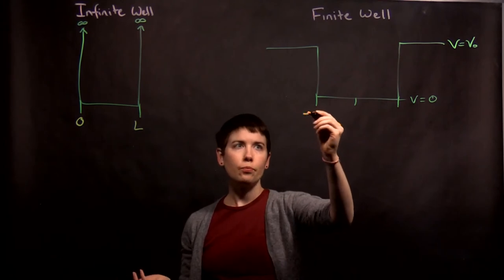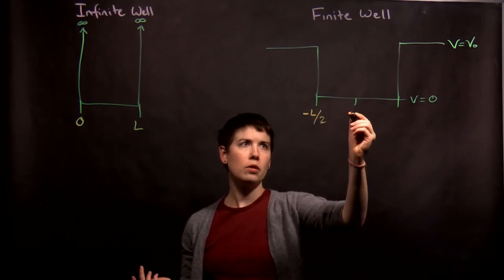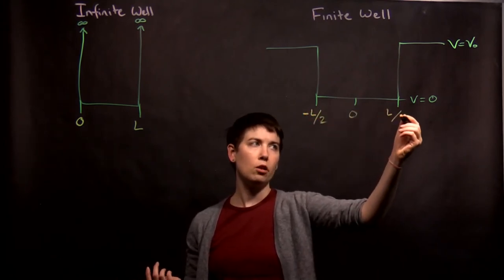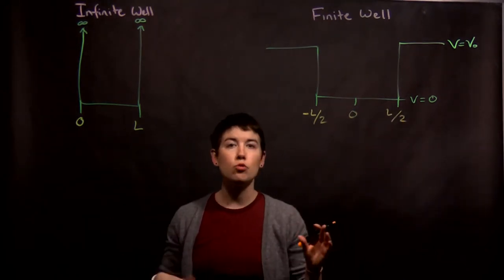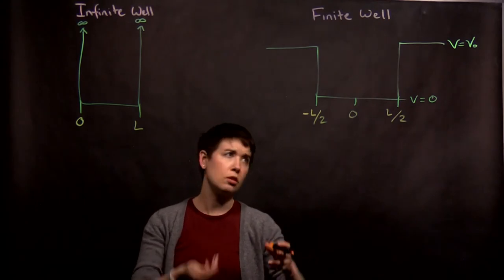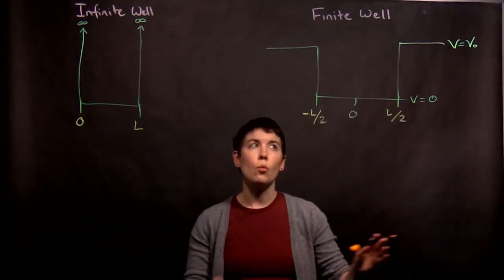Mathematically here it's going to be simpler to do the other case. So we could call this, for instance, negative L over two, zero, L over two. Or you could call this negative A and A. That's up to you. Just notice whatever you're following, the book, this video, we can relabel this different ways.